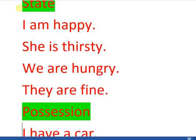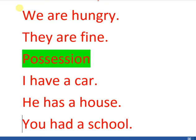The third and last category is position. The word 'position' is taken from 'possess' — whenever we have something that belongs to us. For example: 'I have a car' — 'have' is a verb because it describes the position of the subject. 'He has a house' — 'has' is a verb. 'You had a school' — 'had' is a verb because it describes that the subject had something in the past.